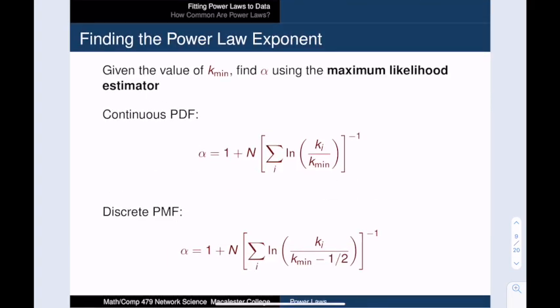For now, let's assume that we already know the value for kmin. We will come back to finding kmin later in the video. We use this formula to find the best fitting power law exponent, alpha. To fit a discrete PMF, we make one small adjustment and subtract 1 half in the denominator.